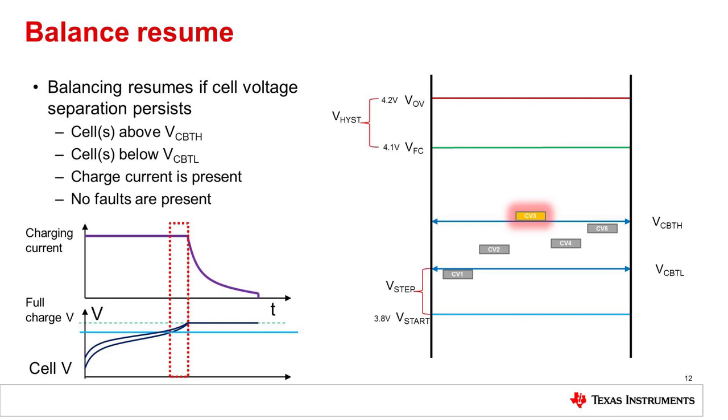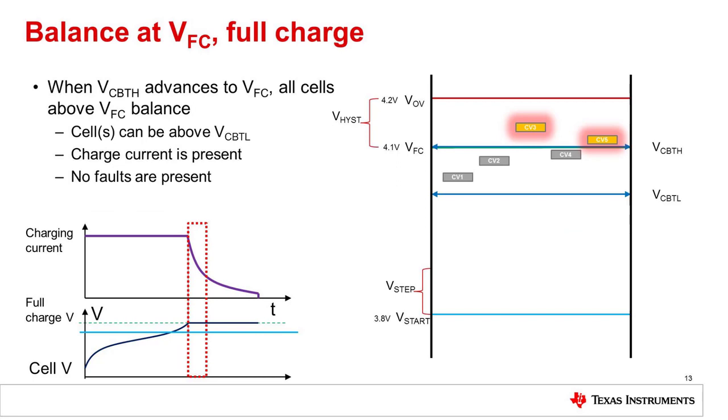This widely separated voltage balancing mode operates when there is current and there are no faults. Once the cells reach the VFC threshold, which is the hysteresis level below the overvoltage threshold, the part enters into a second mode of balancing. In this mode, the requirement to have cells below the lower cell balance threshold is dropped. All cells above the VFC threshold are balanced as long as the charge current remains sufficient.